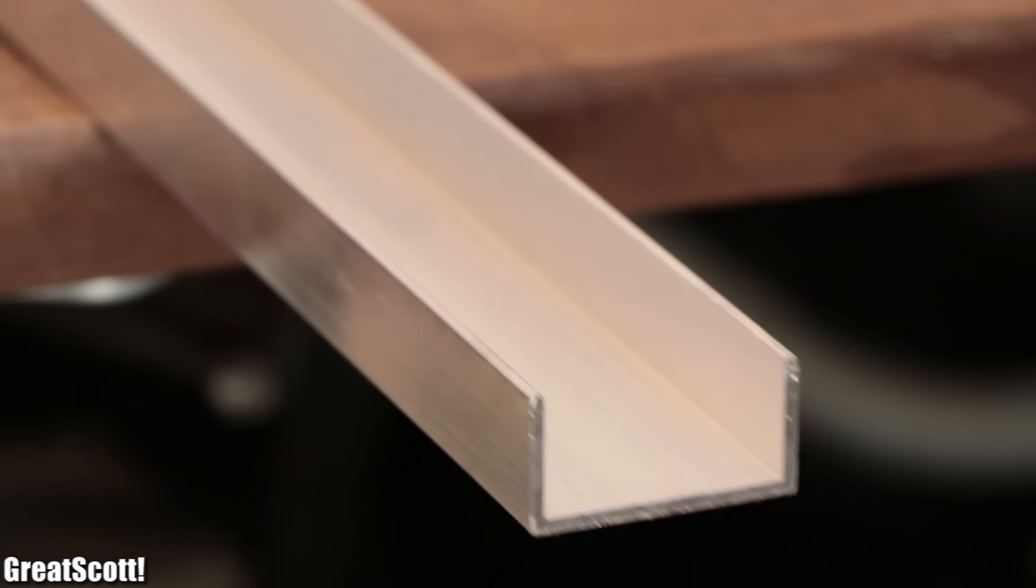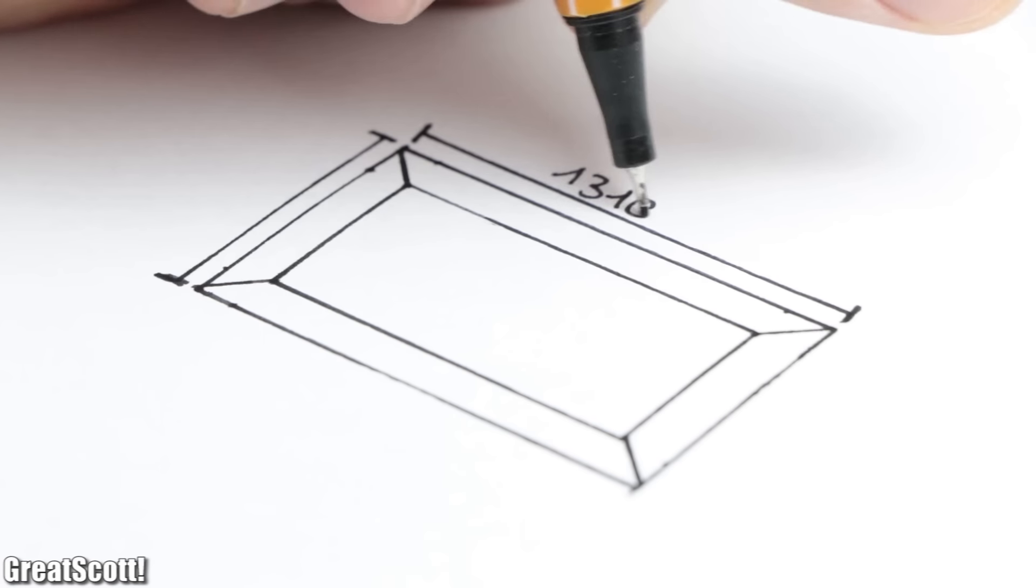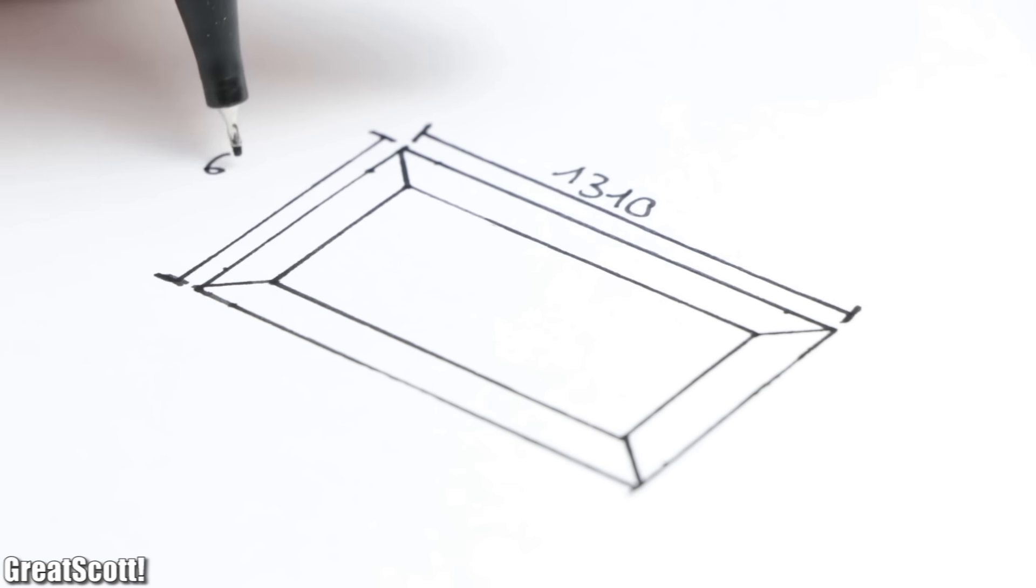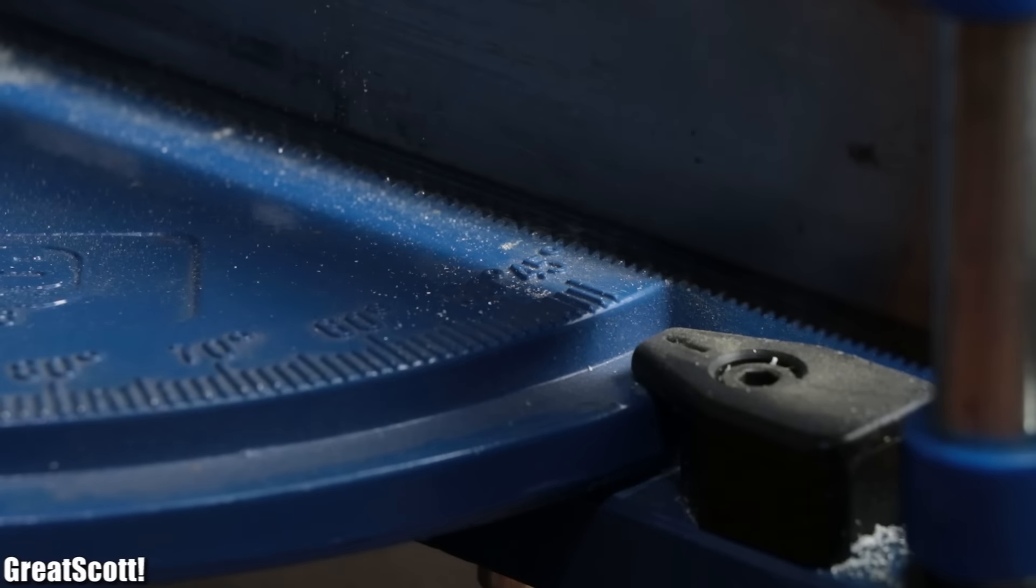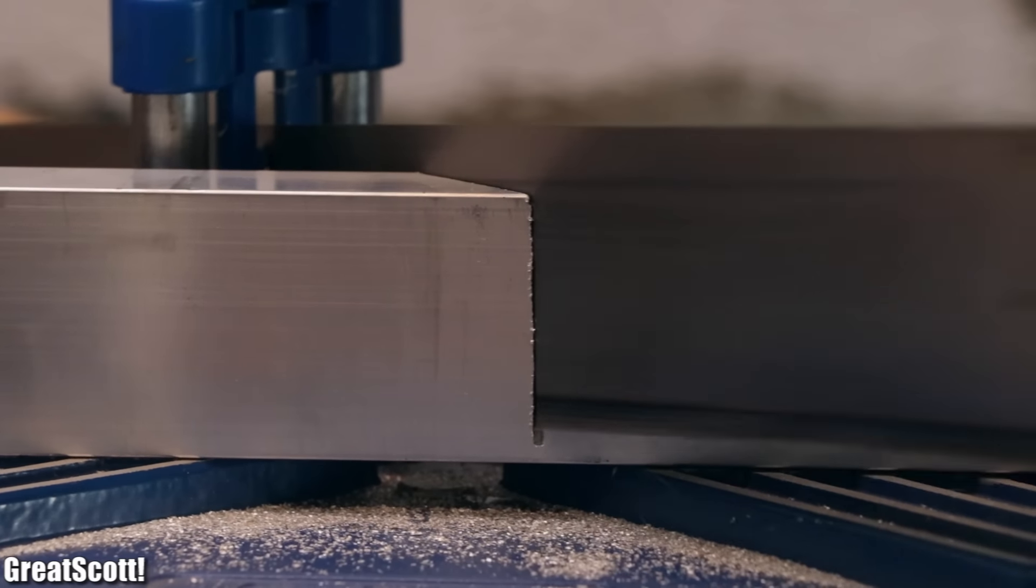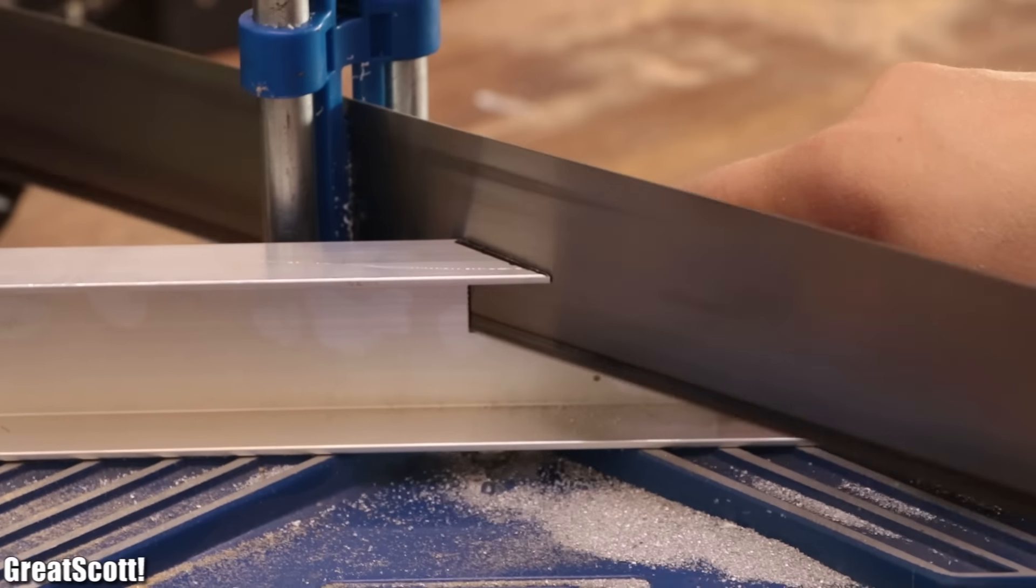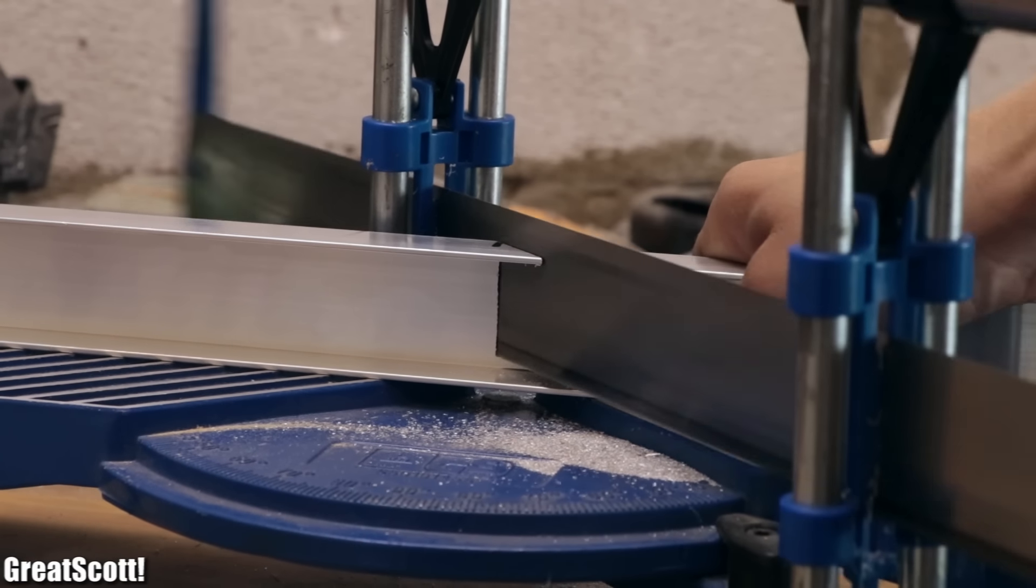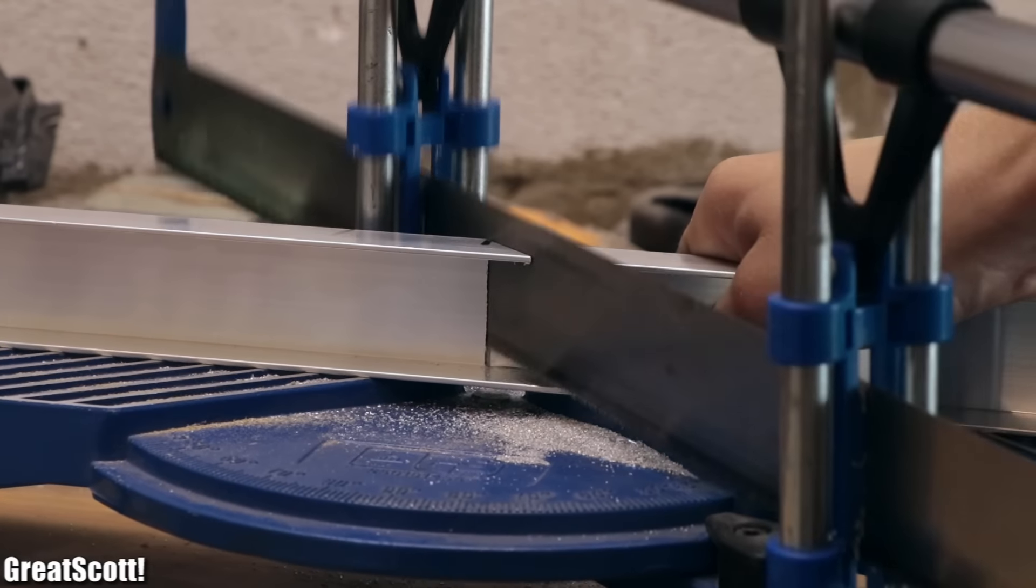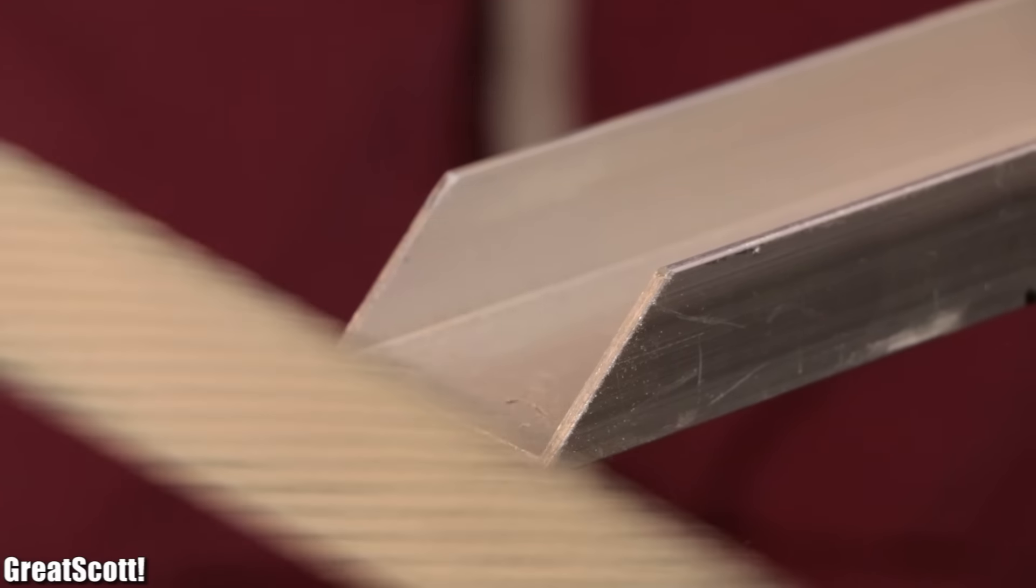To start off I got myself aluminum U-channels with those dimensions. Out of them I wanted to create the frame of the solar panel. So I got myself a miter saw, set its angle to 45 degrees and created two 131 centimeter pieces and two 61 centimeter long pieces from the U-channels. This task was certainly a bit exhausting, but after half an hour and a bit of rust treatment for the sharp edges, I got my four frame pieces.